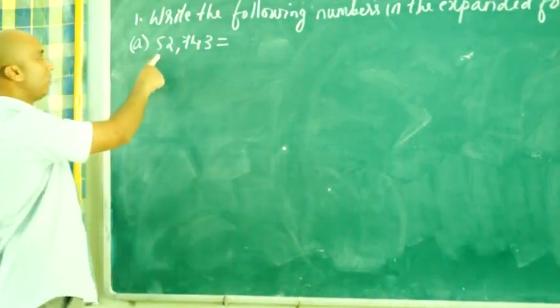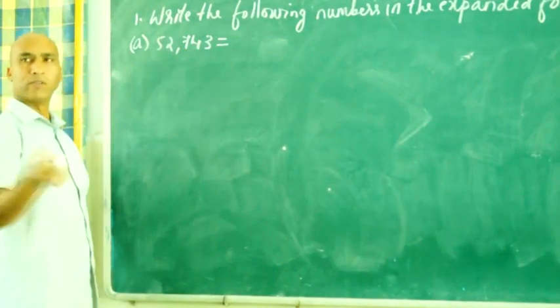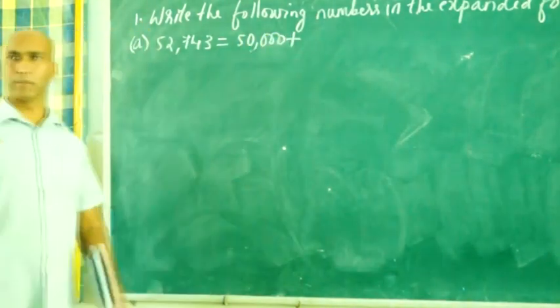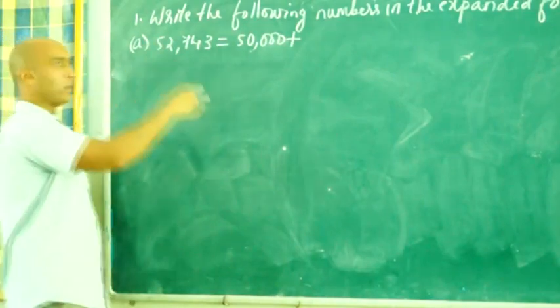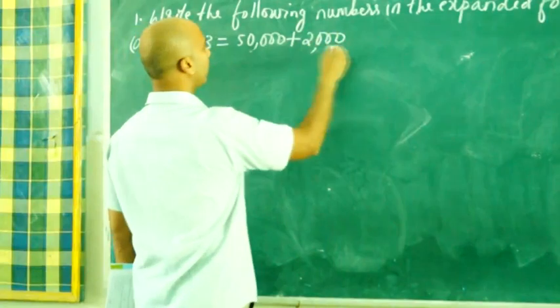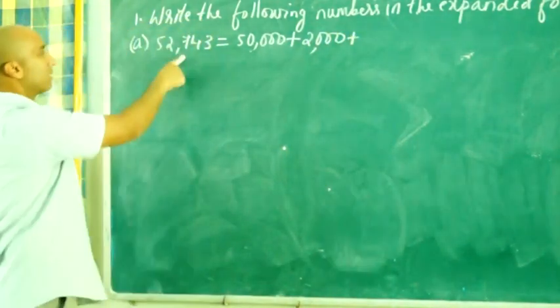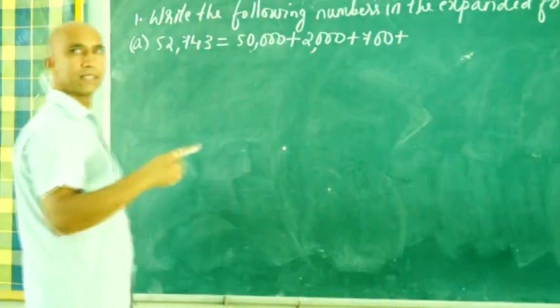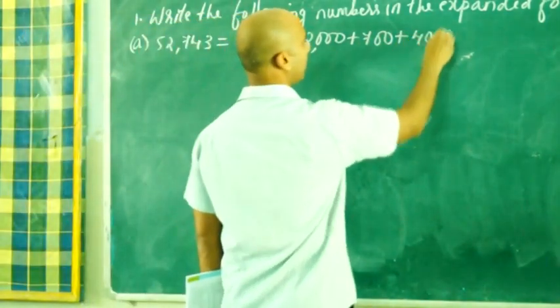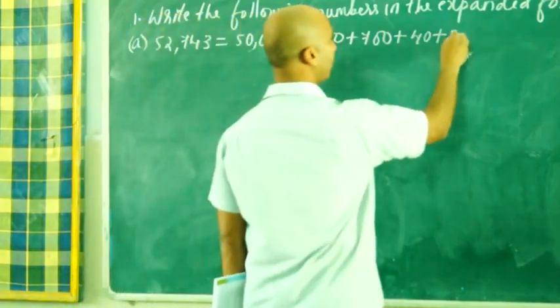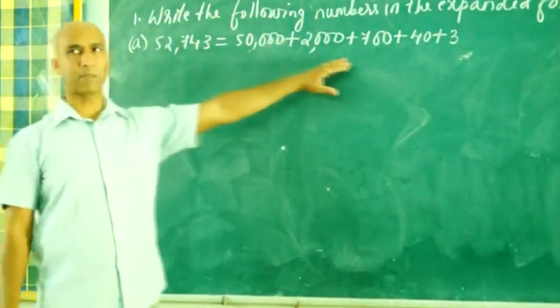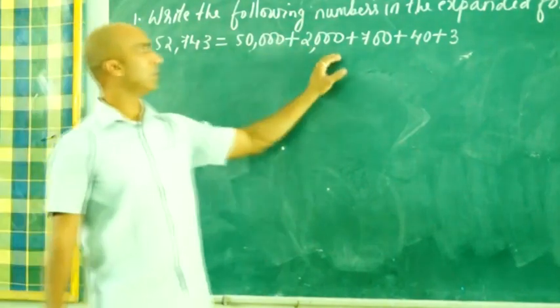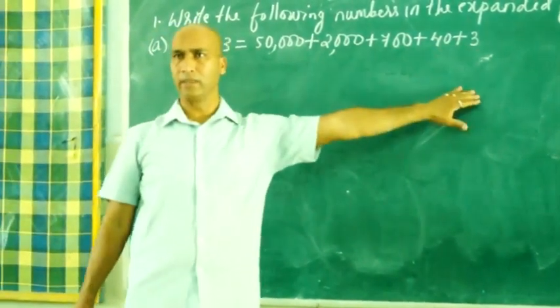So first digit is 5. Place value of 5 is what? 5 into 10,000, that is equal to 50,000. So 50,000 plus. 2 is in 1000 place, 2 into 1000, 2000. Plus 7 is in 100 place, 7 into 100, 700. Plus 4 is in 10 space, 4 into 10, 40. Plus 3 is in 1 space, 3 into 1, 3. So this is in expanded form. 50,000 plus 2000 plus 700 plus 40 plus 3.